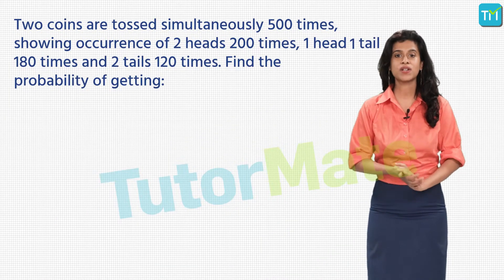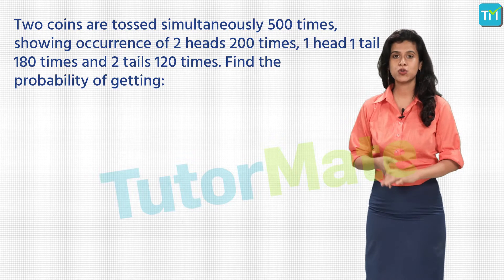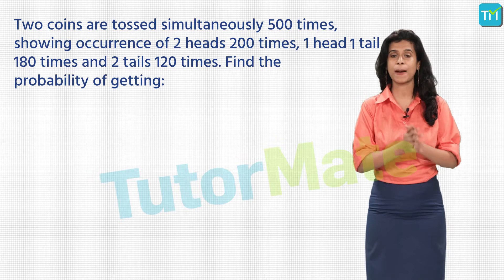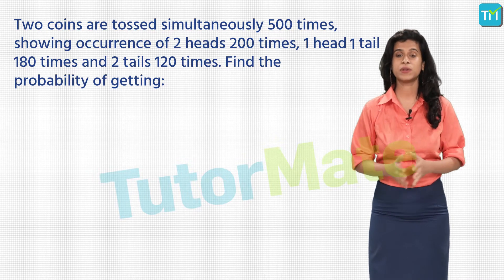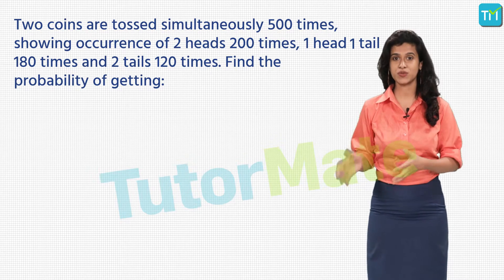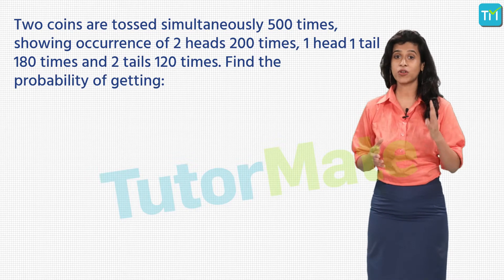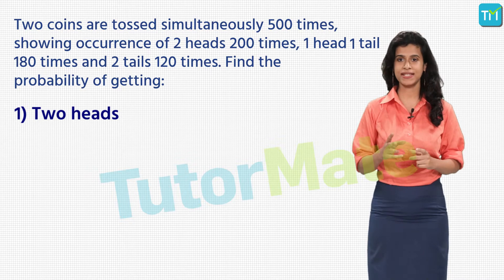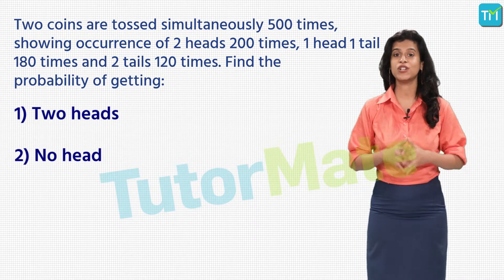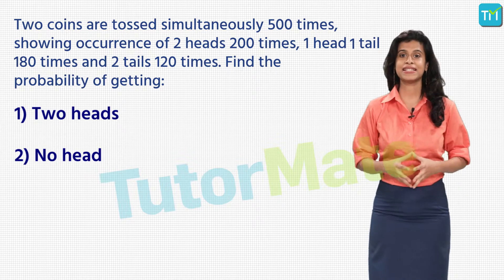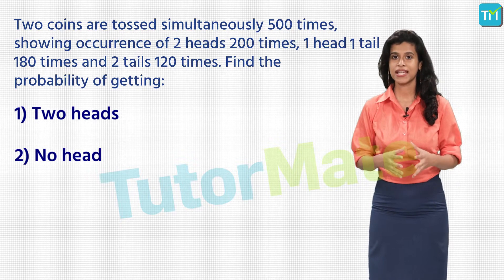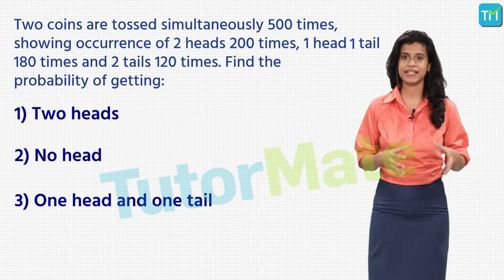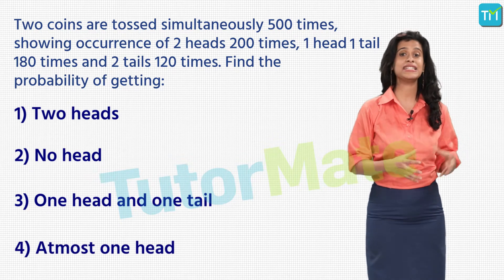Now two coins are tossed. The results were: 2 heads showed up 200 times, the 1 head 1 tail combination showed up 180 times, and there were 120 occurrences of 2 tails. We need to find four things: the probability of getting 2 heads, the probability of getting no heads (tails on both coins), the probability of getting 1 head and 1 tail, and the probability of getting at most 1 head.